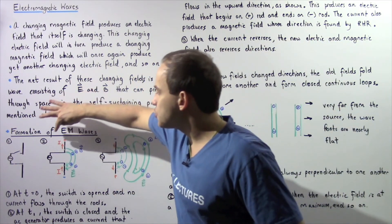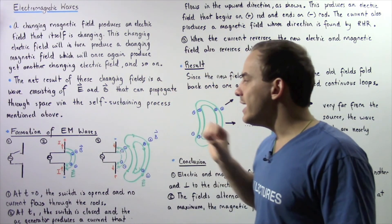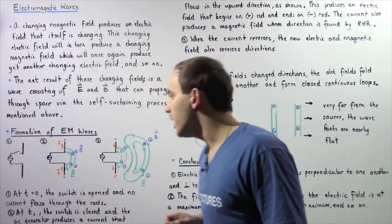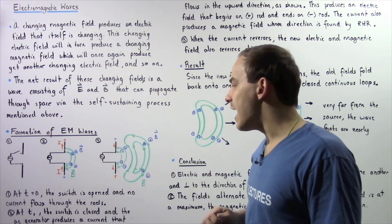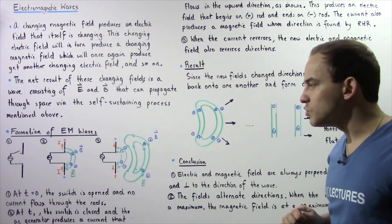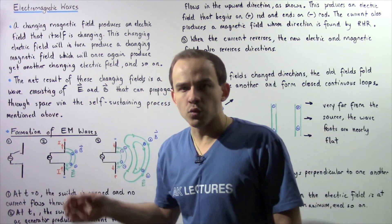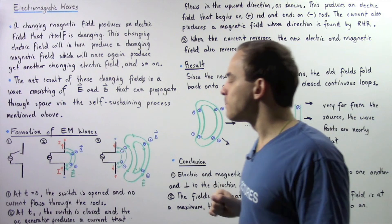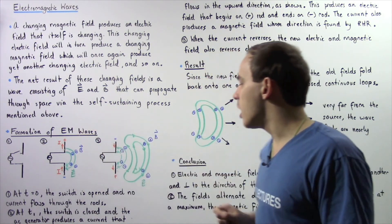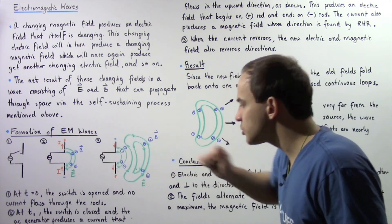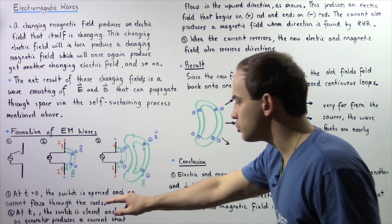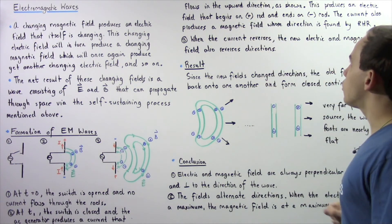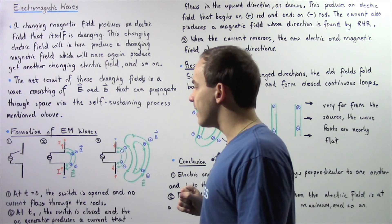In diagram two, at a time T1 the switch is closed. When the switch is closed, the AC generator begins to produce an alternating electric current that travels through the two rods of the antenna. Initially, the electric current flows in the upward direction as shown in the diagram.